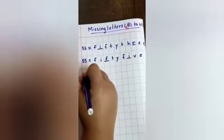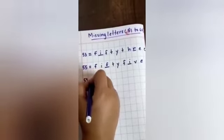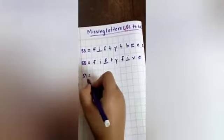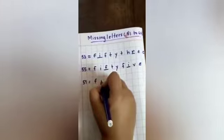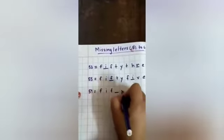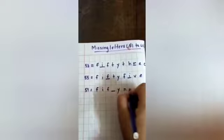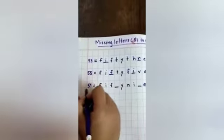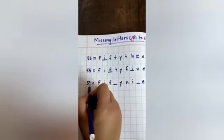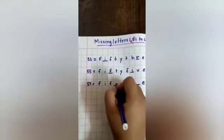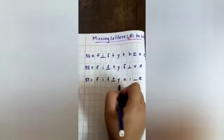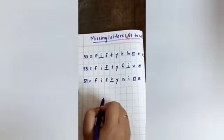Do you know the spelling of 59? 59 is equal to F-I-F dash Y and I dash E. What comes after F? T. F-I-F-T-Y FIFTY N-I-N-E NINE. So 59 is FIFTY NINE.